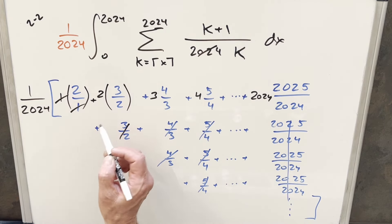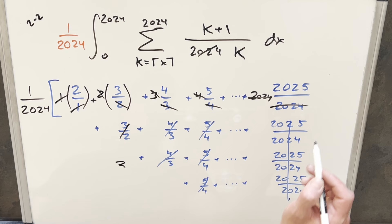But then you'll notice what happens here. Of course, I can cancel one with one, that doesn't really matter. But I can cancel two with two, three with three, four with four, 2024 and 2024. And so all we need to do now is sum up the natural numbers from two to 2025.